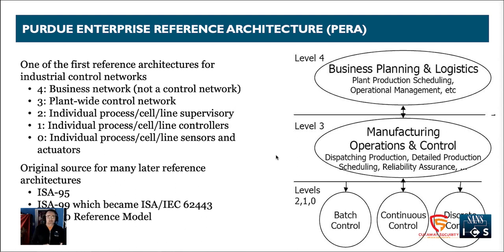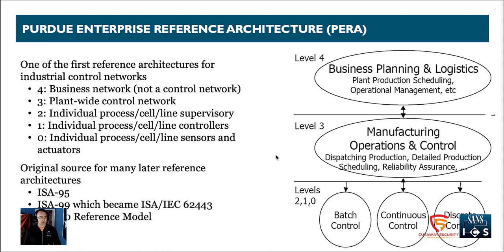That is your control network at levels three, two, one, and zero. No control network is operational without the business network. We have business servers providing or requiring information from the process, and infrastructure providing communications for all teams — email servers, telephones, and so forth. Our business network is level four, planned and organized in the ISA 95 to ensure the process ran with availability and resiliency, with different parts not negatively impacting each other.